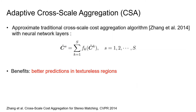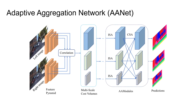We further approximate the traditional cross-scale cost aggregation method with neural network layers to handle large textureless regions. These two modules are integrated for cost aggregation in our full framework.